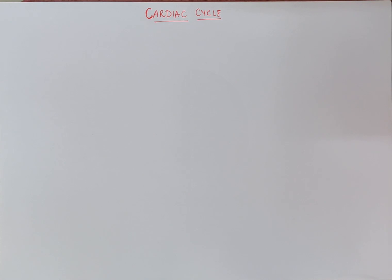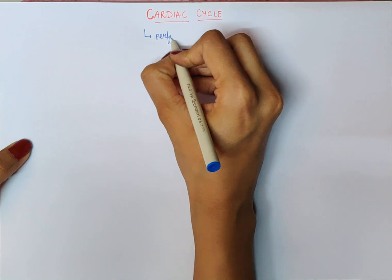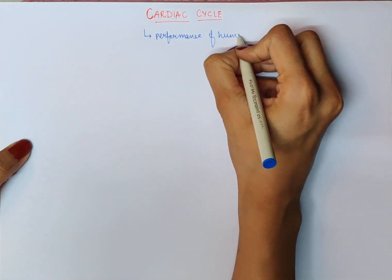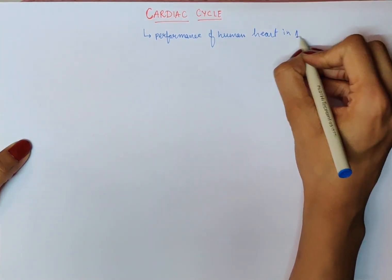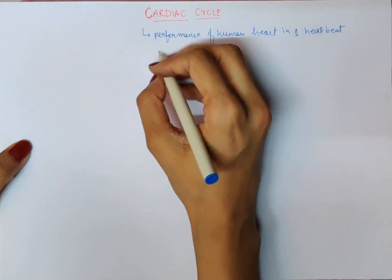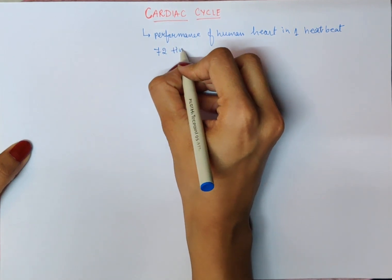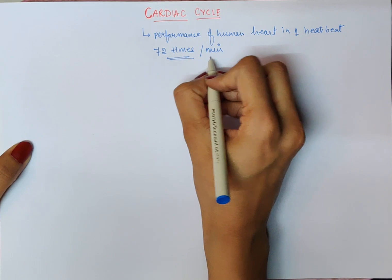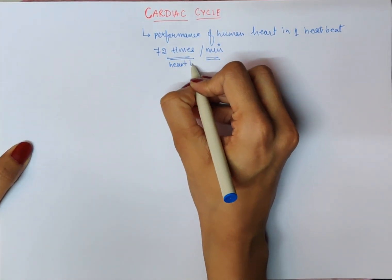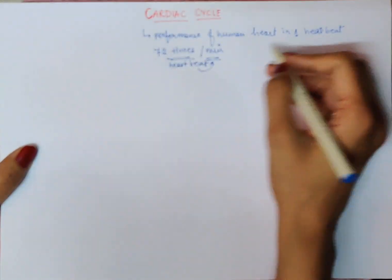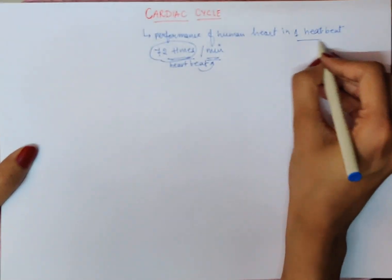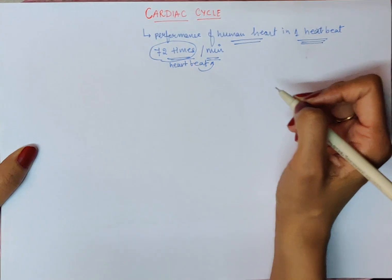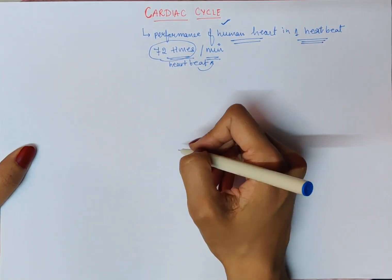So first of all, let's see what is Cardiac Cycle. Cardiac Cycle is the performance of the human heart in one heartbeat. A human heart beats 72 times in a minute, so there are 72 heartbeats per minute. The functions performed by the human heart during each heartbeat are collectively known as the cardiac cycle.